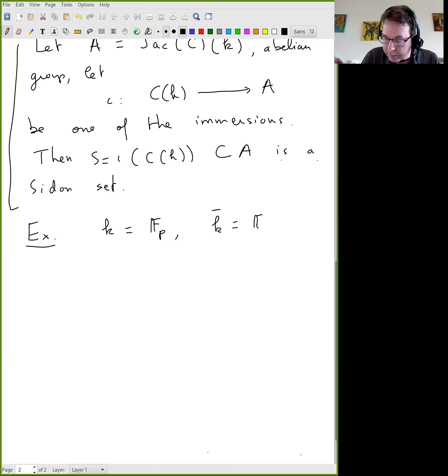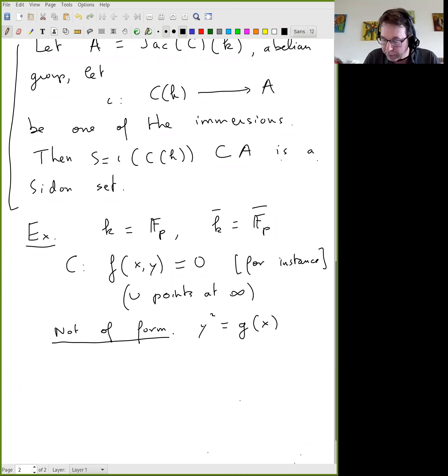Then I'll write K bar is F_P bar, an algebraic closure. So the curve can be defined, for instance, by as being a plane curve. It doesn't have to be, but it could be like that. There are different possibilities. For instance, what any curve would do, in which case you have to add points at infinity to make it projective. Not hyperelliptic means it cannot be reduced to a form Y squared equals some polynomial.